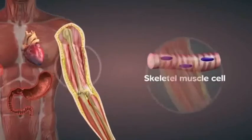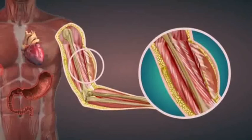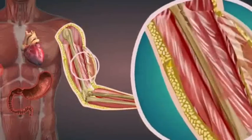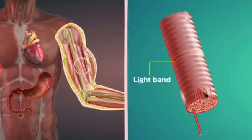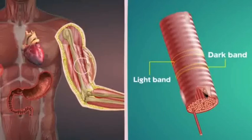The skeletal muscle helps in locomotion and other voluntary body movements. It is made of long fibers with alternate light and dark bands or striations. So, skeletal muscles are also called striated muscles.